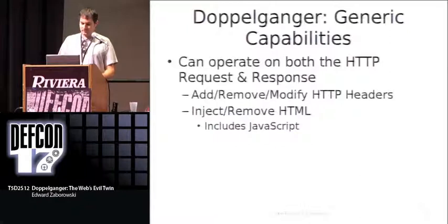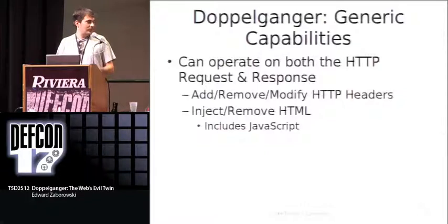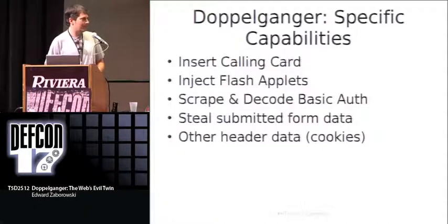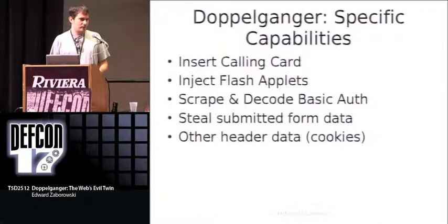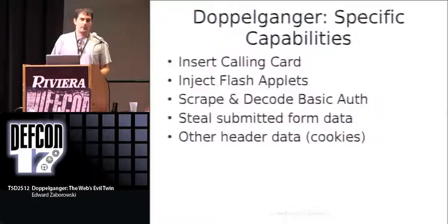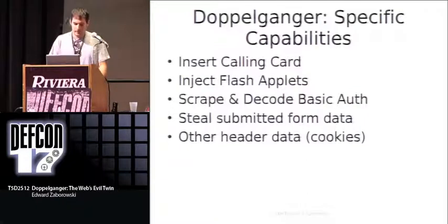Doppelganger works generically as a malicious proxy and can operate on both the headers and the content of the page. Specifically, it has these abilities which can be customized or added to — this is what's available out of the box. You only need to create a JavaScript file containing the directives you want it to execute. It can insert a calling card, inject Flash applets, scrape and decode HTTP basic authentication — since basic auth is only base64 encoded — and steal form data and other header data such as cookies.